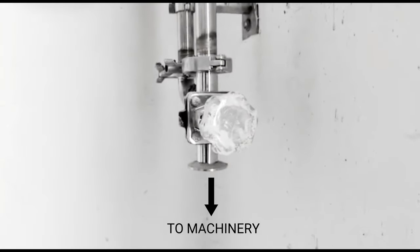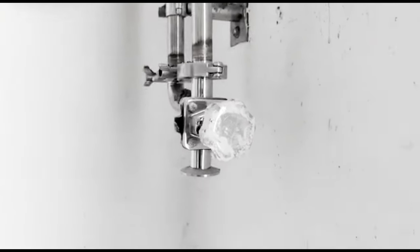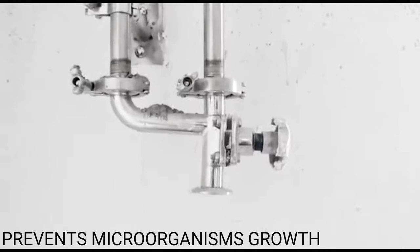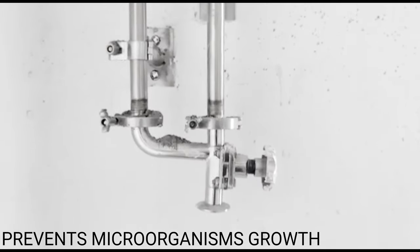The loop system is used so that water doesn't stop anywhere in between and is in continuous flow, so that there is no chance of microorganism growth in the water distribution system and proper pure water is supplied for the production purpose.